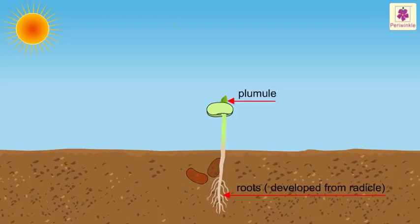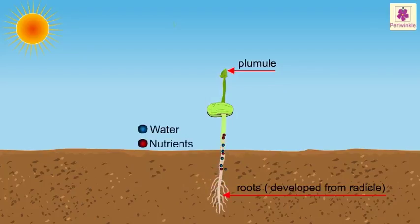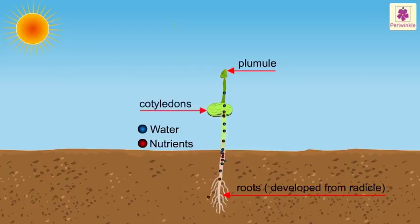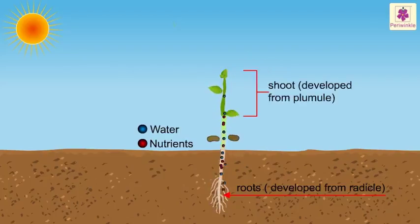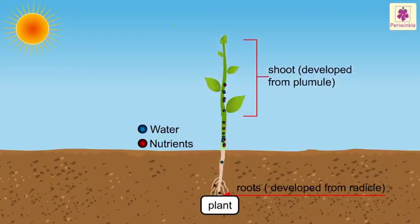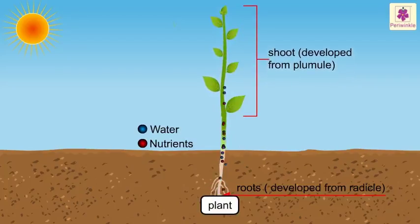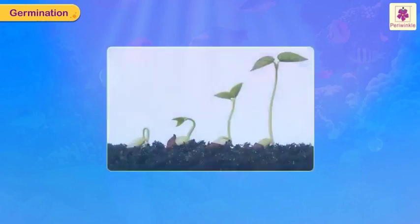The seed coat opens completely and the plumule is exposed. This grows upwards. The water and nutrients for the plant are absorbed by the roots that have grown out of the seed. The cotyledons begin to shrink and the seed slowly turns into a seedling.